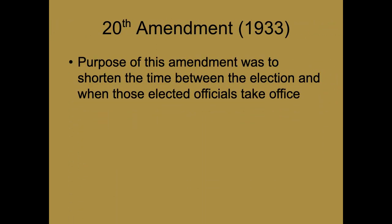The 20th Amendment shortened the time between elections and when elected officials actually take office. It used to be that elections were in November, but elected officials didn't take office until mid to late March. The previously elected official was still in office during that time, but not much got done. They're known as lame duck candidates, because why pass new legislation when some members are going to be out of office in March? We already know they're out — they're just filling the rest of their term.